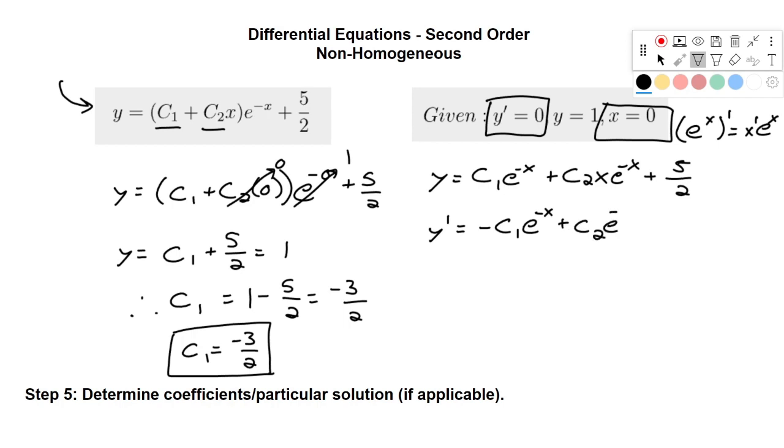plus the derivative of the second. So negative e to the negative x times the first. And then the derivative of 5 halves is just 0.